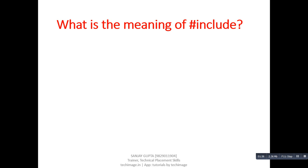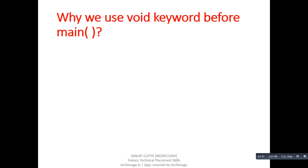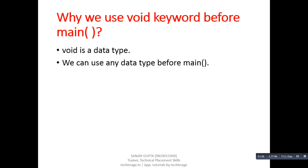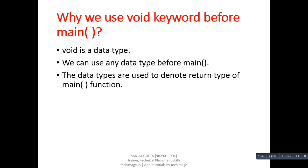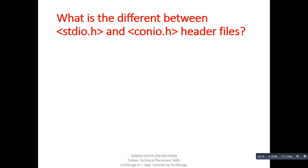Next question: what is the meaning of #include? Answer: it is a preprocessor directive, it is used to include any header file in our program. Next question: why we use the void keyword before main? Answer: void is a data type. We can use any data type before main. The data types are used to denote the return type of the main function.